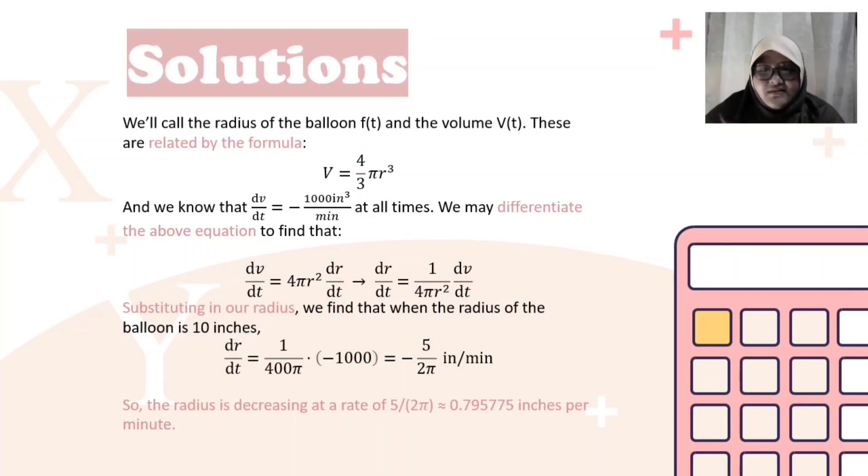The probabilities is 0.795775 inch per minute.